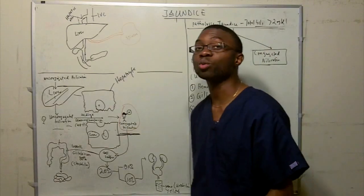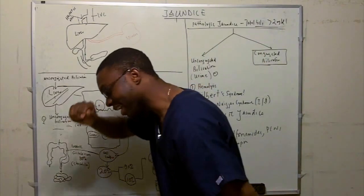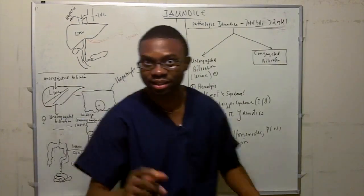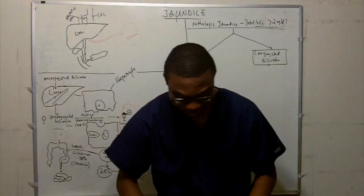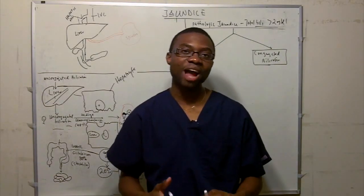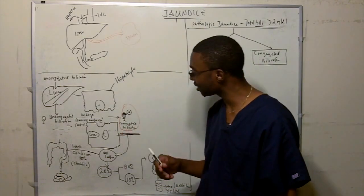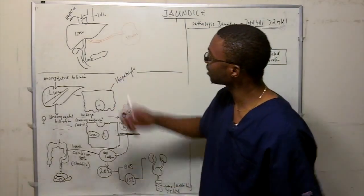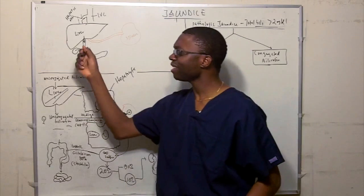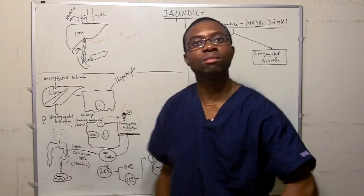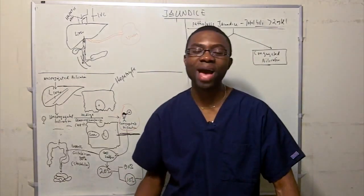Now for conjugated hyperbilirubinemia. The bilirubin has been conjugated — it's water-soluble, has its 'Yankee hat' — but something is blocking it from leaving the liver into the gallbladder and duodenum. The problem is extrahepatic biliary obstruction: anything that blocks the bile ducts prevents conjugated bilirubin from flowing out, like a highway roadblock.